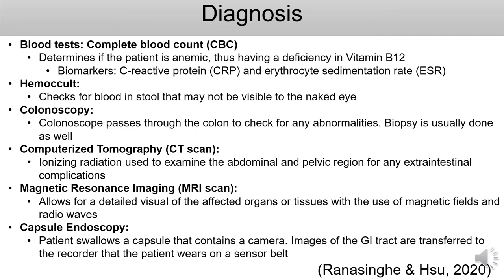The colonoscopy will show the cobblestone appearance. The doctor takes a long tube with a camera, places it into the rectum, and moves it through the large intestine. For the biopsy, the colonoscope has an instrument channel that will remove a polyp and gather a tissue sample from the wire loop on the instrument. A CT scan uses ionizing radiation to examine the abdominal and pelvic region for extra-intestinal complications — it can show abscesses, fistulas, and fissures. The MRI allows for a detailed visual of affected organs or tissues using magnetic fields and radio waves. For capsule endoscopy, patients swallow a capsule containing a camera, and images of the GI tract are transferred to a recorder the patient wears on a sensor belt — this procedure usually lasts eight hours.